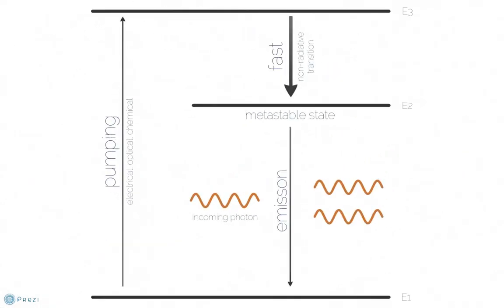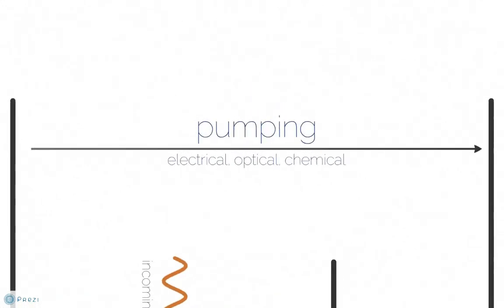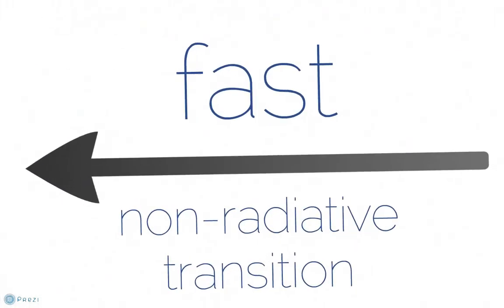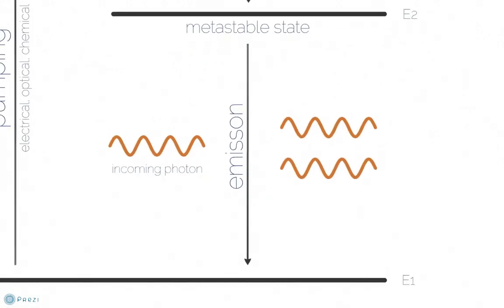Here is a diagram showing a three energy level system required to achieve population inversion for lasing. Electrons are pumped, through various methods, to an excited state where they undergo a rapid non-radiative transition, relaxing into the metastable state. They accumulate in this long-lived state, creating population inversion between this state and the lower energy level E1. Electrons in the metastable state await an incoming photon to stimulate the transition, resulting in an identical photon being emitted.